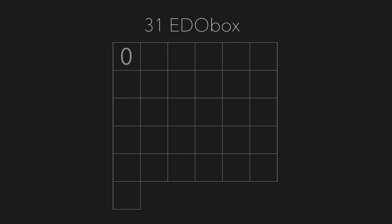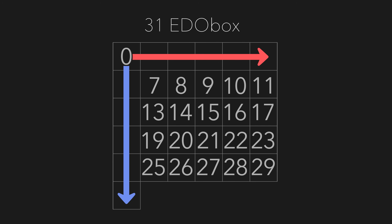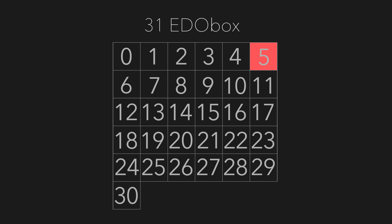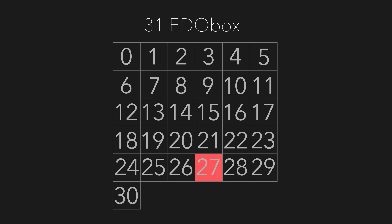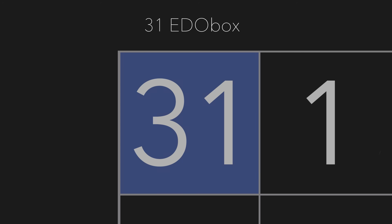We start with a single reference point: 0. You can think of this as your root note or just a single point of focus in a given moment. Next, let's populate what I call our EDO box with all possible steps in a single octave of 31. We read this box from left to right, top to bottom. You might notice it only goes up to 30, not 31, because step 31 is the octave — the same pitch class as 0.